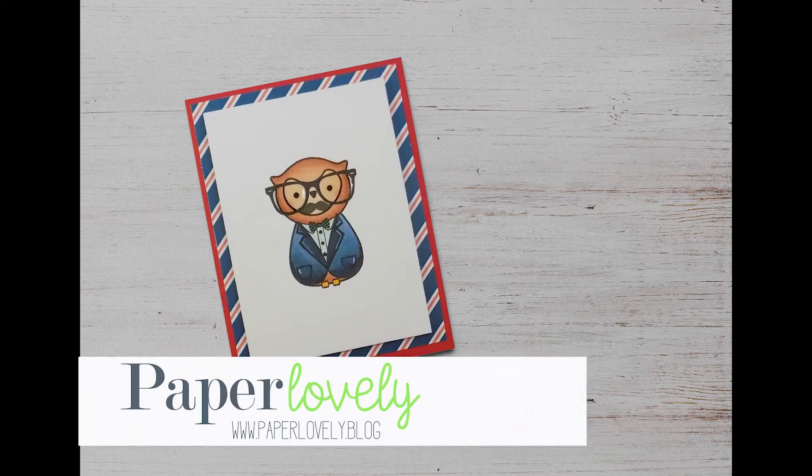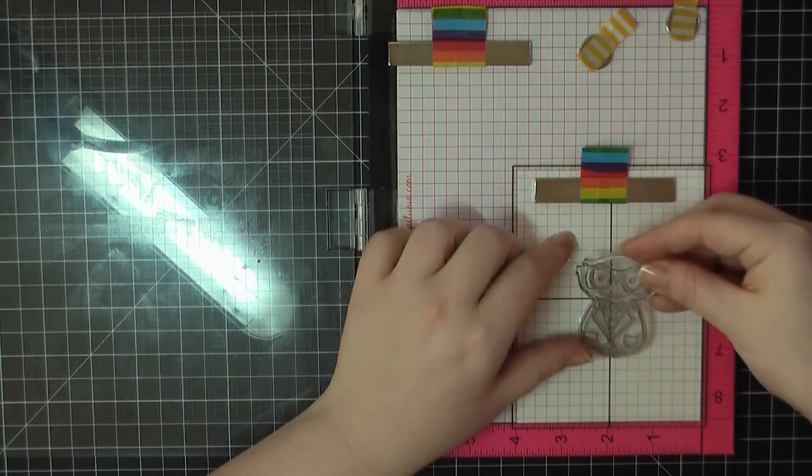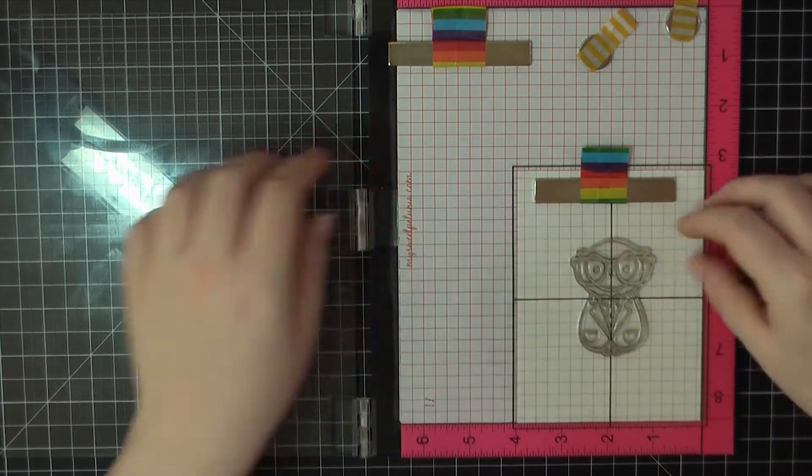Hi there, it's Sarah from Paper Lovely. Thanks for stopping by today. I'm going to be working on a Father's Day card and I'm using a stamp set from Uchi's Designs. It's called Hipster Owls.